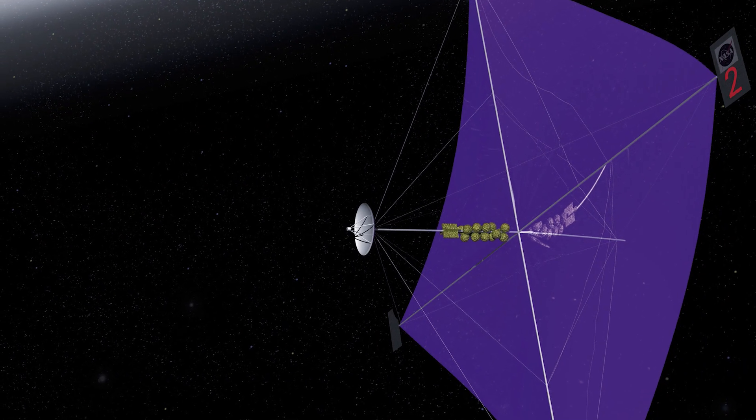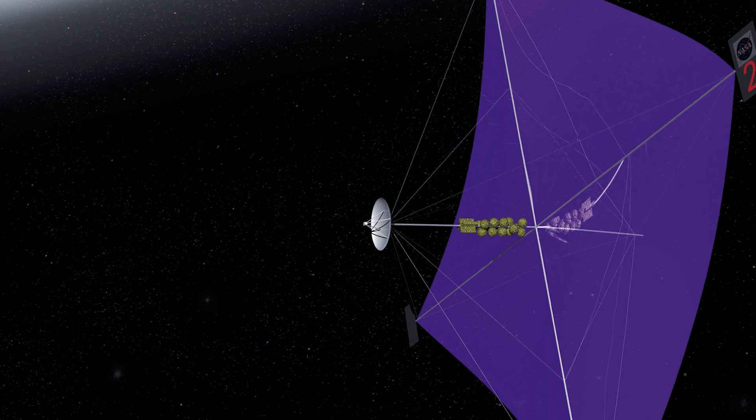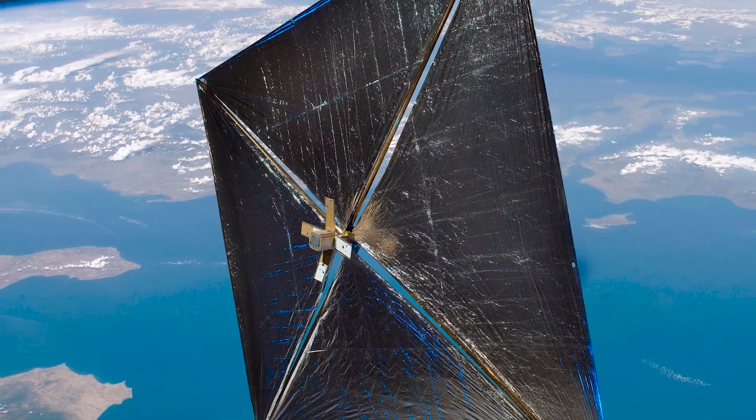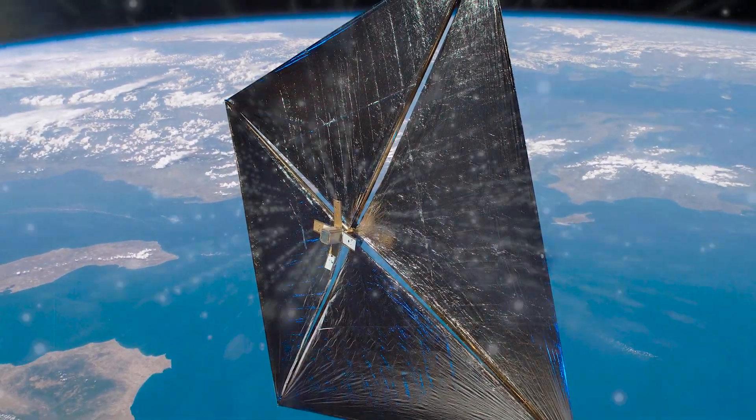The first spacecraft to make use of this technology was Icarus, launched in 2010. I mentioned before light was made up of waves or photons, rippling electric and magnetic fields hurtling across space-time as fast as the universe will allow.